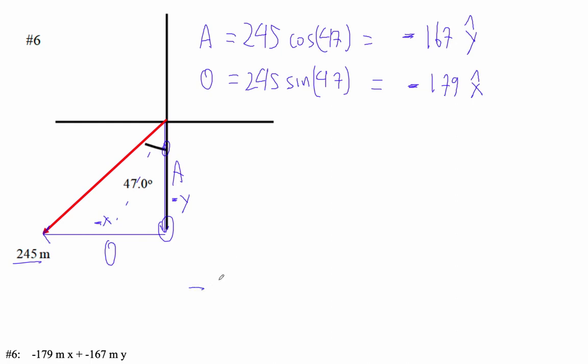So negative 179 meters in the x direction, plus negative 167 meters in the y direction. That's correct. And this is the answer. There you go.